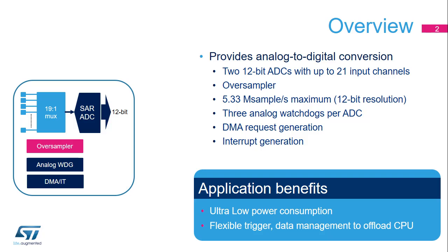There are 21 analog inputs available across the two ADCs. The oversampling unit pre-processes the data to offload the main processor. It can handle multiple conversions and average them into a single data with an increased data width, up to 16 bits. The ADC module itself is a 12-bit successive approximation converter with additional oversampling hardware. The sampling speed is 5.33M samples per second for 12-bit resolution. The data can be made available to the system either through DMA transfers, interrupts, or polling.